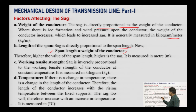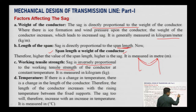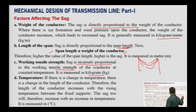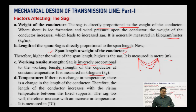Working tensile strength — sag is inversely proportional to the working tensile strength. If you increase the tensile strength of the conductor, sag can be reduced; if tensile strength is weak, sag will increase. Tensile strength is measured in kilograms for a constant temperature, and span length is measured in meters. As temperature changes, the conductor length increases and the catenary between towers grows, so sag increases.